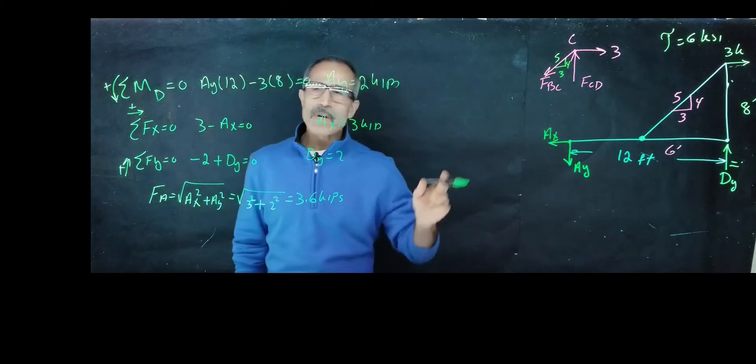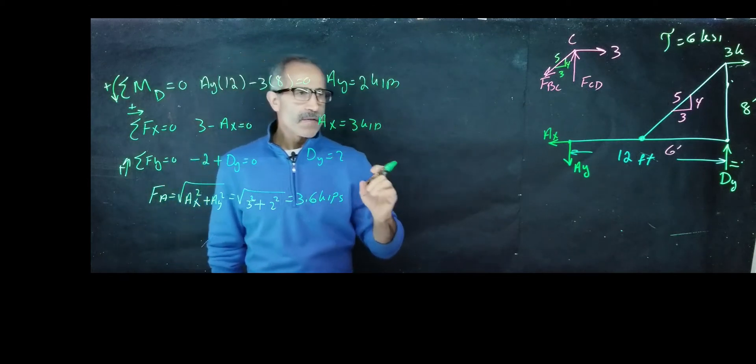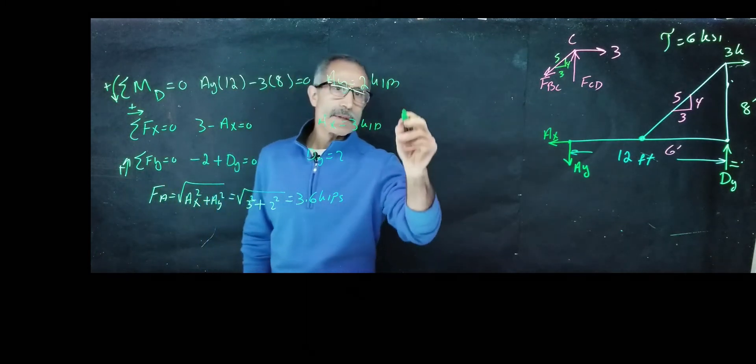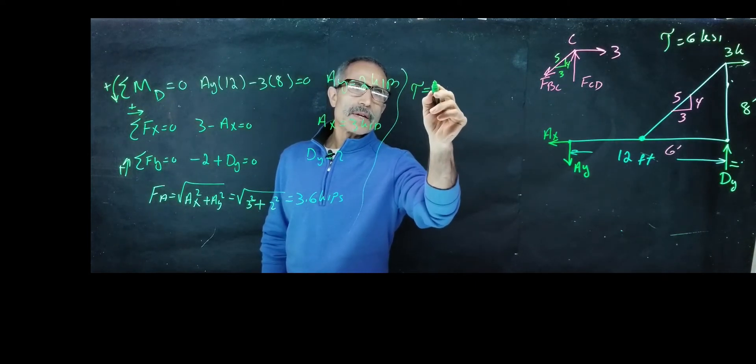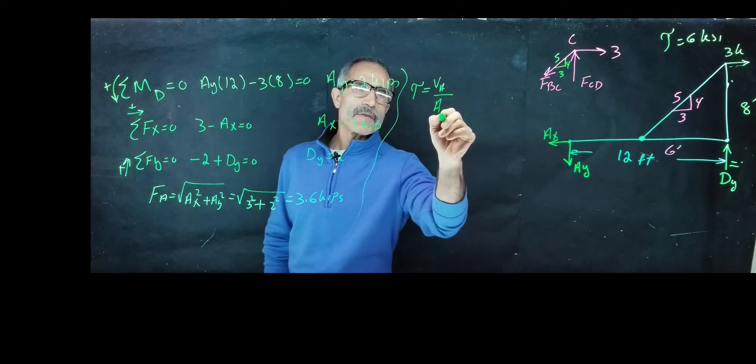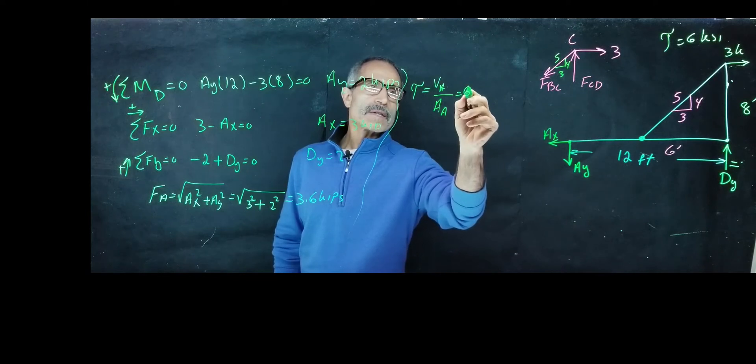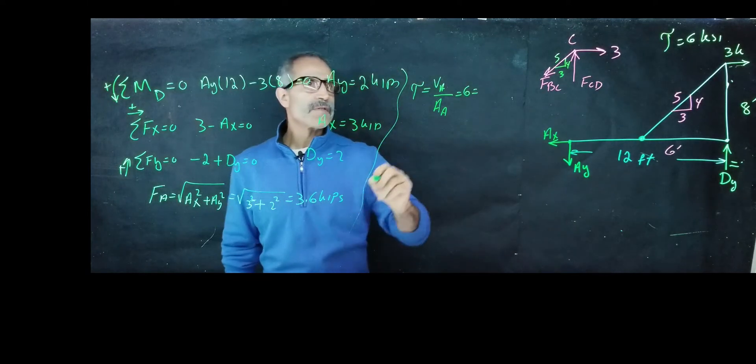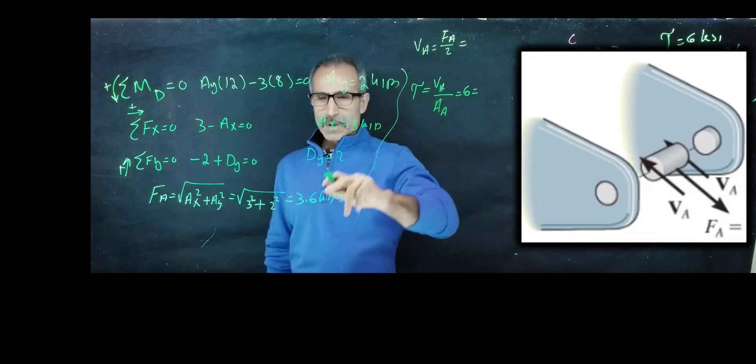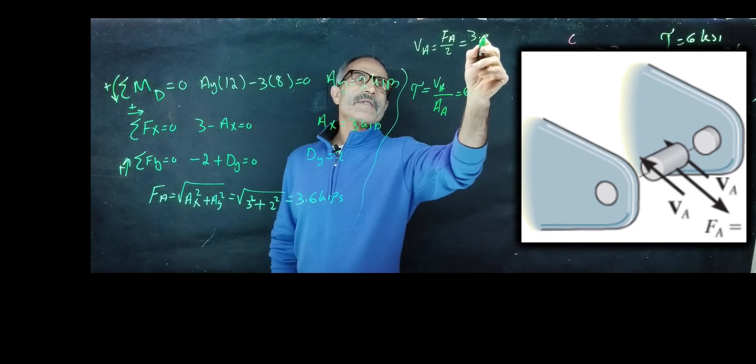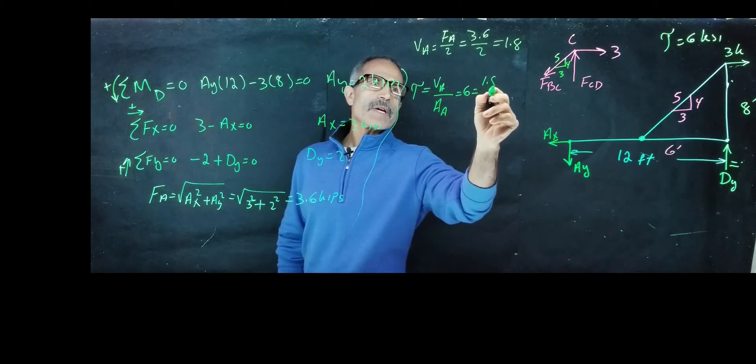All right, when we have a double shear pin here, take a look at the diagram. Therefore, our shear stress is going to be at A, Va divided by area of A. And we have 6 ksi equals, but let's find Va. Va is Fa, since it's doubled, divided by 2. 3.6 divided by 2 is 1.8. So I'm going to have 1.8 divided by the area.